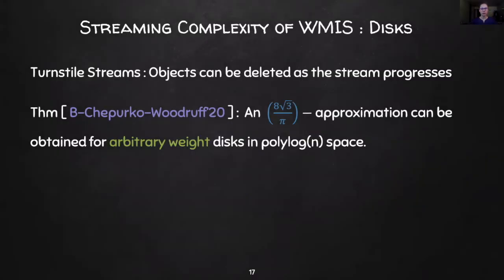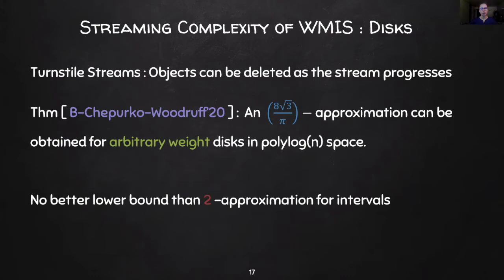Finally, we show an approximation ratio of 8 square root 3 over pi for disks in turnstile streams. We describe where this constant appears from and connection to sphere packing later in the talk. We note that no better lower bound than a 2-approximation is known for this problem.